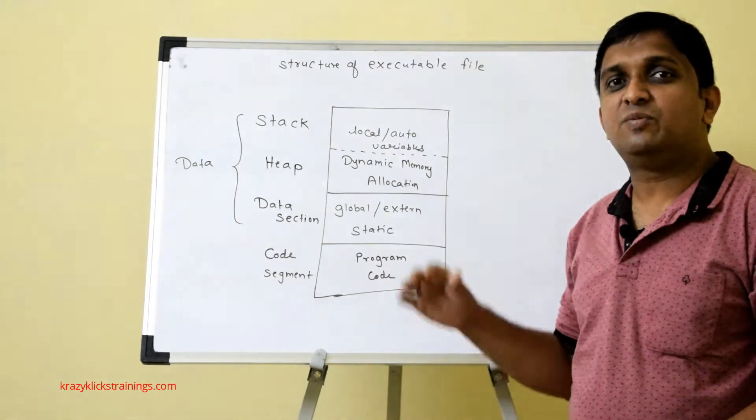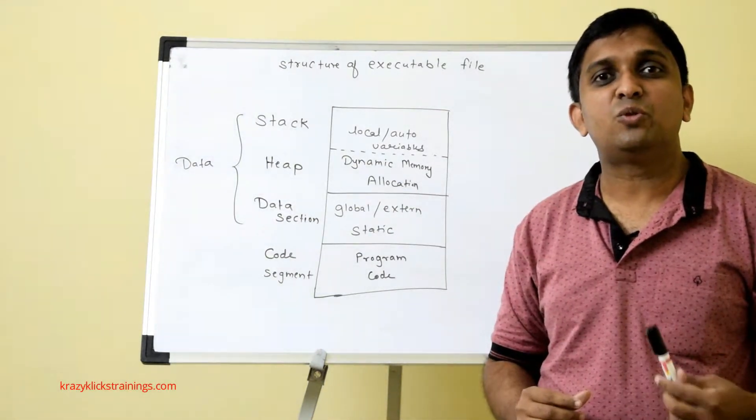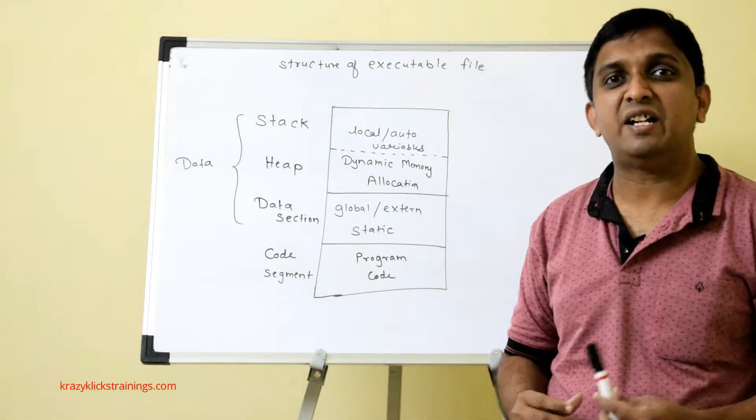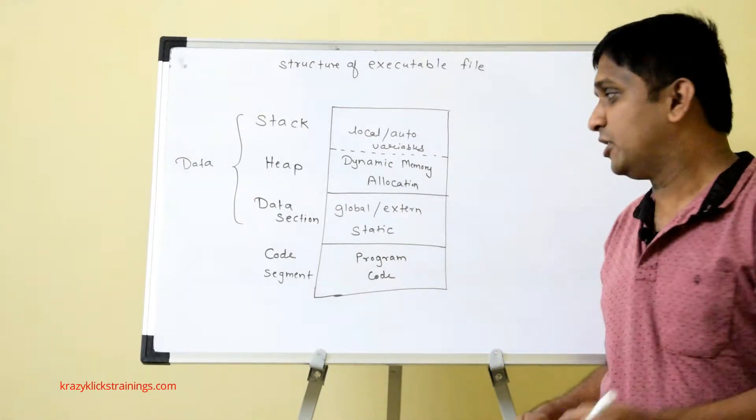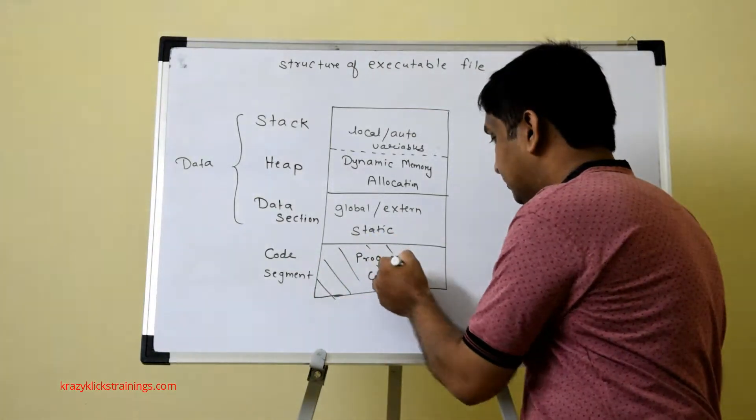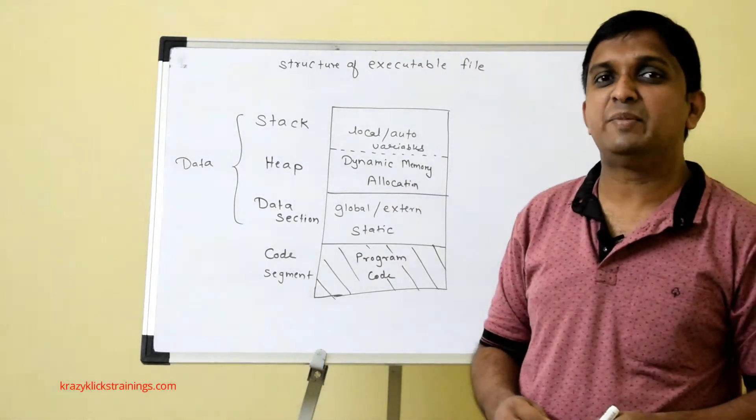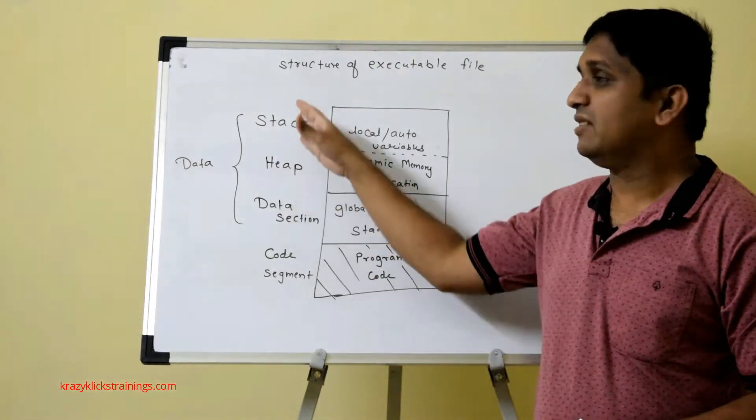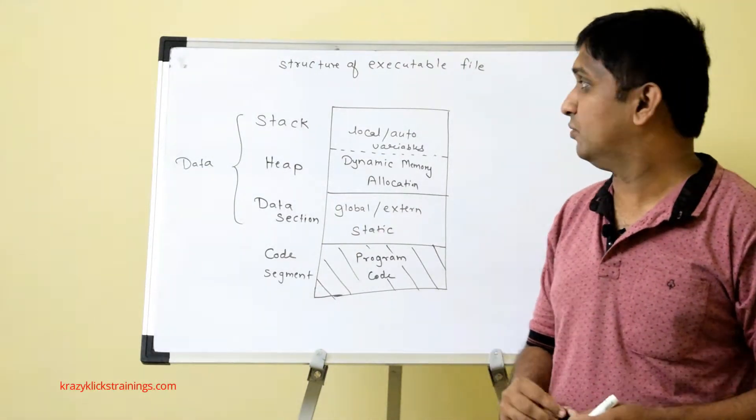Out of these four parts, the last thing, code segment, is used to store your source code. The source code that we write is saved into the code segment, so it is not responsible for storage of any data. Whenever you declare variables or do dynamic memory allocation, that is done on these three things. You need to remember each one of these three.